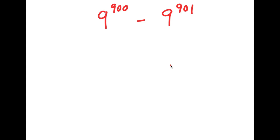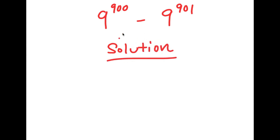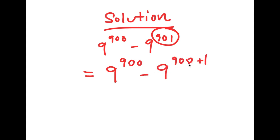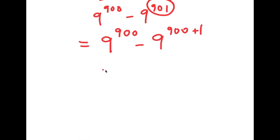So in this problem, I have 9 to the power of 900 minus 9 to the power of 901. I'm going to start by rewriting 901 as 900 plus 1. So this is 9 to the power of 900 minus 9 to the power of 900 plus 1. There is an important exponential property: a to the power of m plus n equals a to the power of m times a to the power of n.